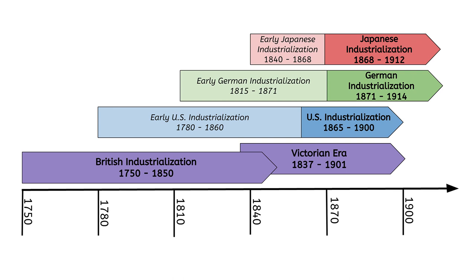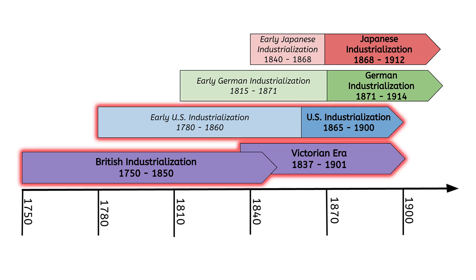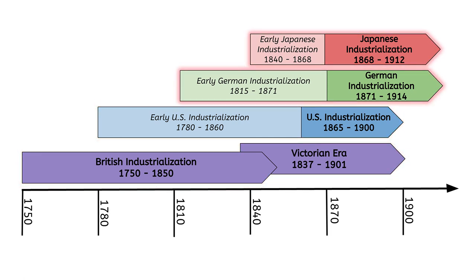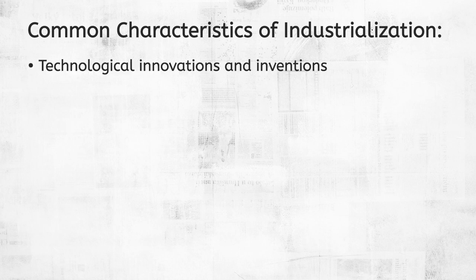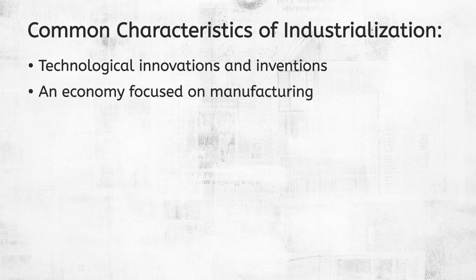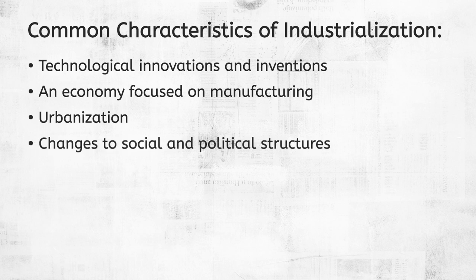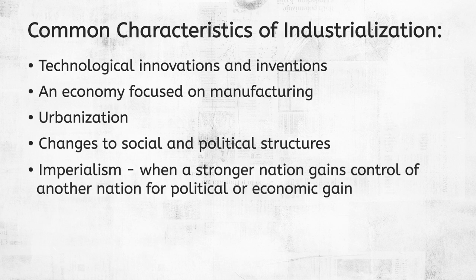Every nation has its own industrialization journey. Some, like Britain and the United States, started in the 18th century. Others, like Japan and Germany, started later. Others are still in the process. Because these journeys are so varied, let's establish some of the common characteristics of industrialization: technological innovations and inventions, an economy focused on manufacturing, urbanization, and changes to social and political structures. Another common feature of industrialized nations is imperialism, which is when a stronger nation gains control of another nation for political or economic gain, like access to valuable resources or trading partners.